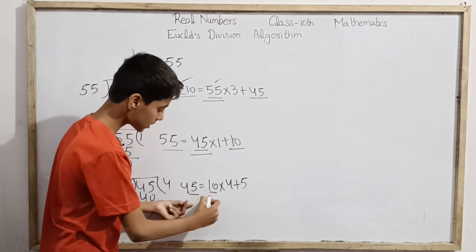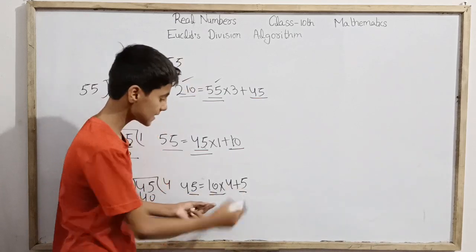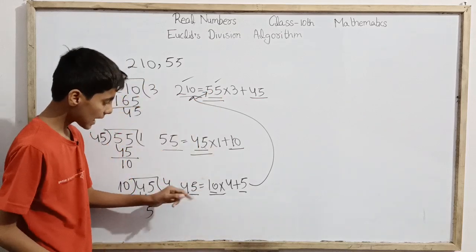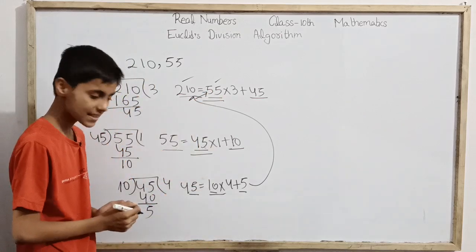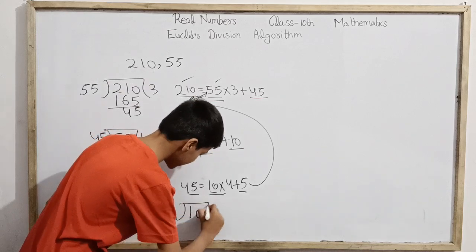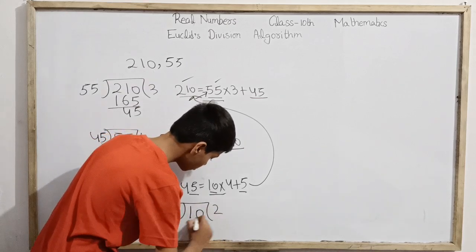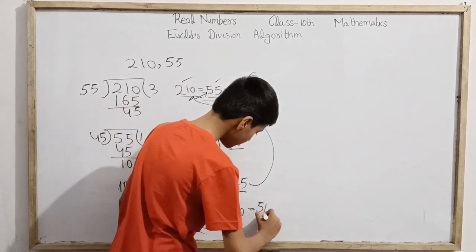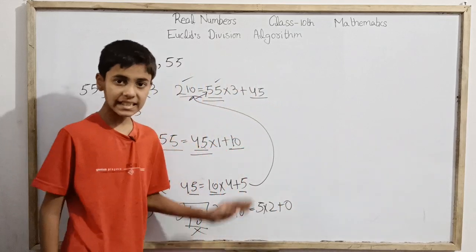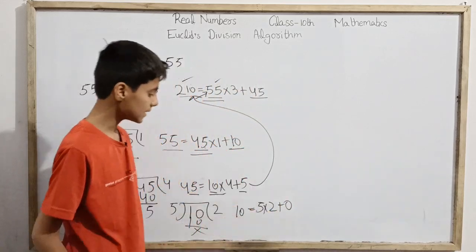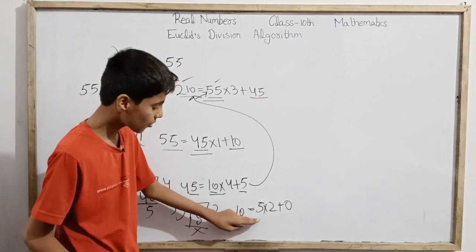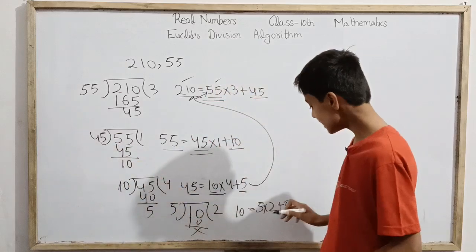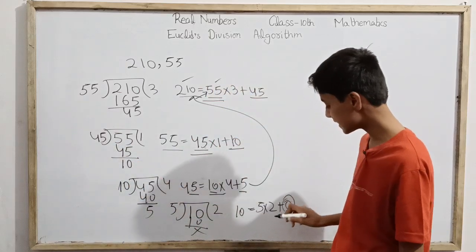For 45 and 10, I divide 45 by 10. It goes in 4 times, leaving 5. So 45 = 10×4 + 5. Again, the common divisor of these two terms is the same as the common divisor of the previous terms, which leads back to our original numbers.